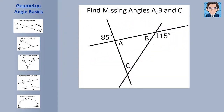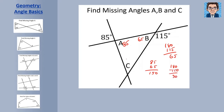In the next problem, we're finding all missing angles. A is a vertical angle to 85 degrees, so A is 85. B and 115 form a straight angle, so B equals 180 minus 115, or 65. To find C, we have a triangle made up of 85, 65, and C. 85 and 65 is 150, so C equals 180 minus 150, which is 30.